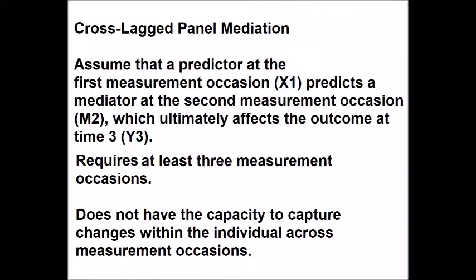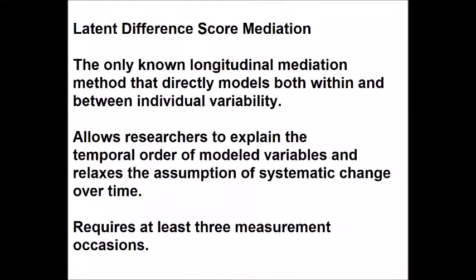The second technique is cross-lag panel mediation, which assumes that the predictor at the first measurement occasion predicts the mediator at the second measurement occasion, which ultimately affects the outcome at the third measurement occasion. It requires at least three measurement occasions, but it does not have the capacity to capture changes within the individual across measurement occasions.